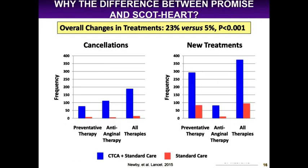The question is, why is the result so different? One main reason is a difference in treatment. In the SCOT-HEART trial, 23% of patients had a change in treatments because primary care doctors were recommended to change management based on CTA results. Patients who should have had preventive therapy cancelled — like aspirin or statin — because no CAD was found had a cancellation, and patients who should be on aspirin or statins were placed on them. There was a 3.5-fold increase in preventive therapy in the CTA arm compared to only 1.7-fold in the PROMISE trial — that's probably why there's such a difference in outcome.